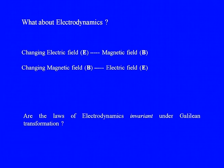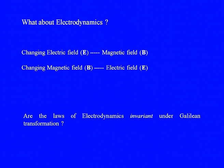Next we move over to what is going to happen in electrodynamics. What does electrodynamics give you? It gives you that if you have a changing electric field, you're going to have a magnetic field, and if you have a changing magnetic field, you're going to have an electric field. Now we ask: are the laws of electrodynamics invariant under Galilean transformation, as the laws of mechanics were?